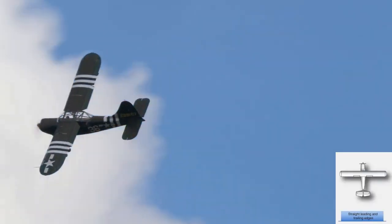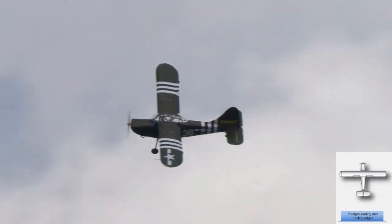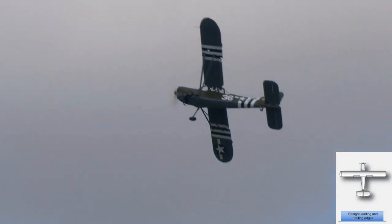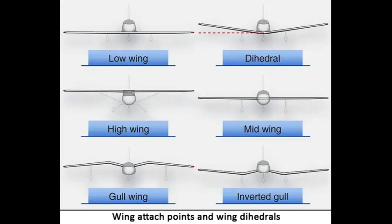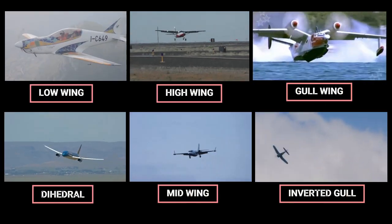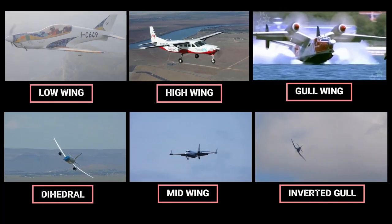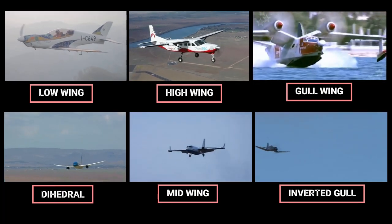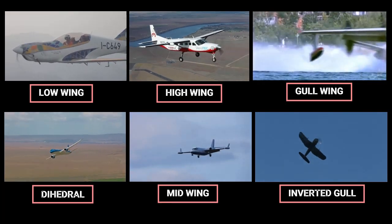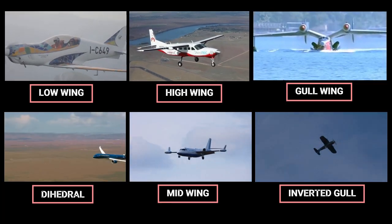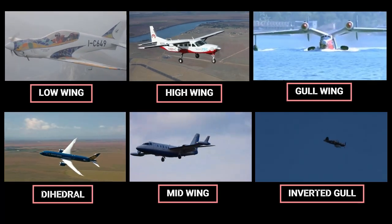One or both edges may be tapered so that the wing is narrower at the tip than at the root, where it joins the fuselage. The wing tip may be square, rounded, or even pointed. The wings of an aircraft can be attached to the fuselage at the top, mid-fuselage, or at the bottom. They may extend perpendicular to the horizontal plane of the fuselage or can angle up or down slightly. This angle is known as the wing dihedral, and it affects the lateral stability of the aircraft.